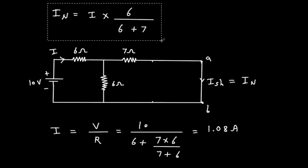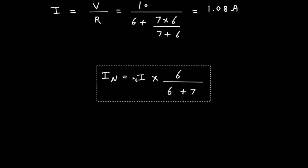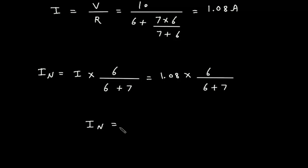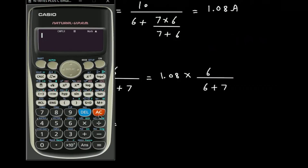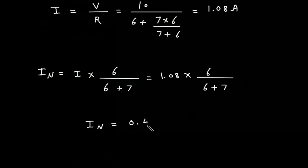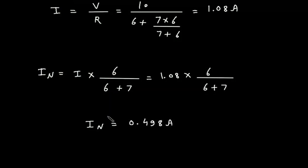From this we can find the value of In. So In equals 1.08 multiplied by 6 divided by 6 plus 7, which gives 0.498 ampere. So 0.498 ampere is the value for Norton's current In.